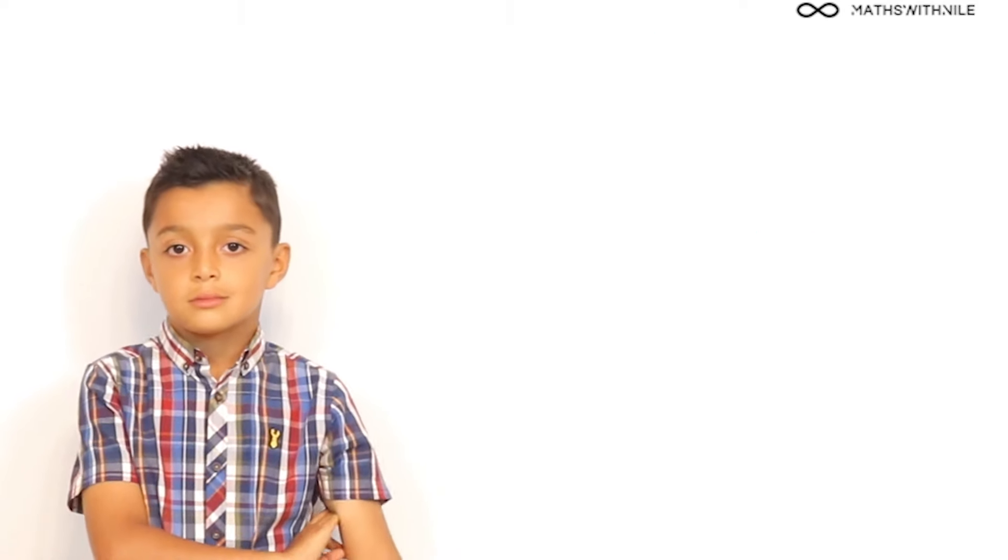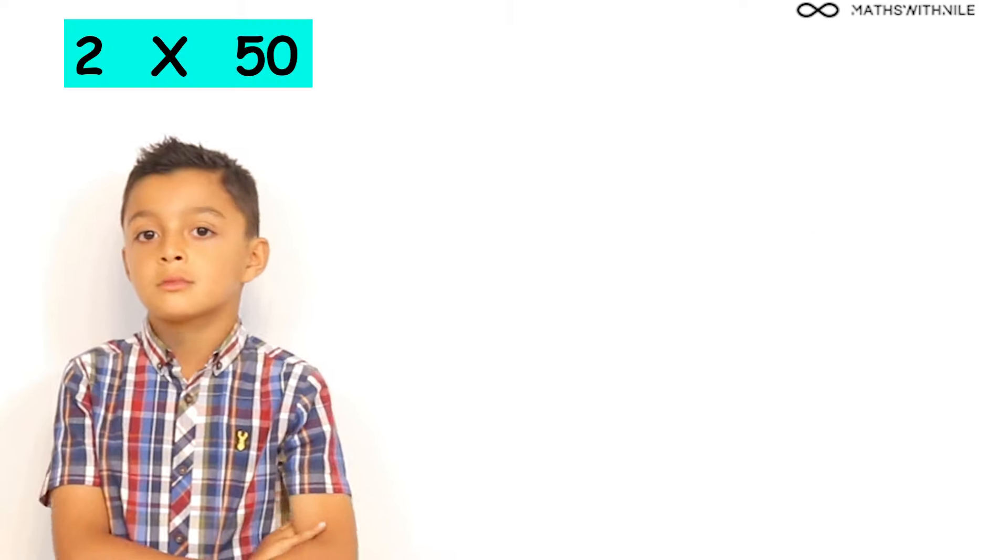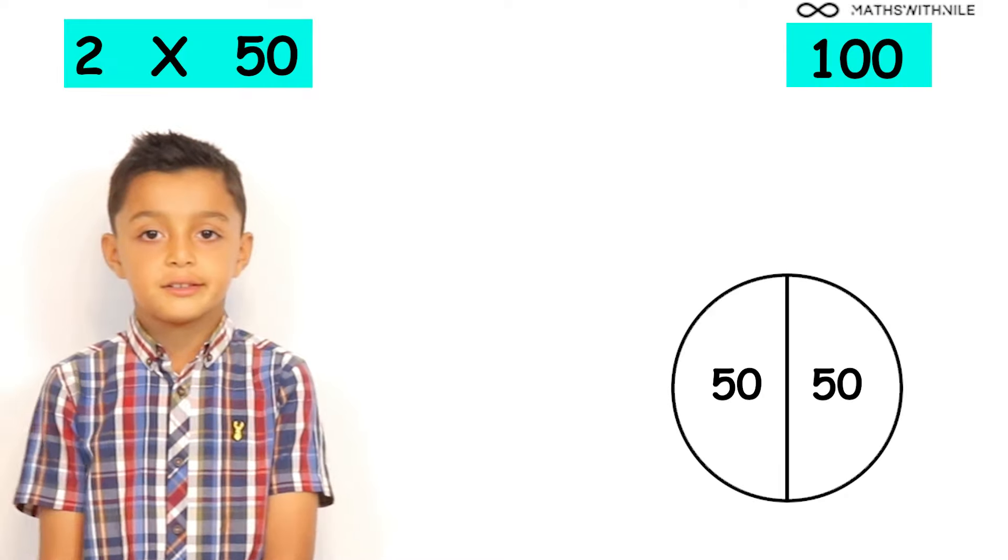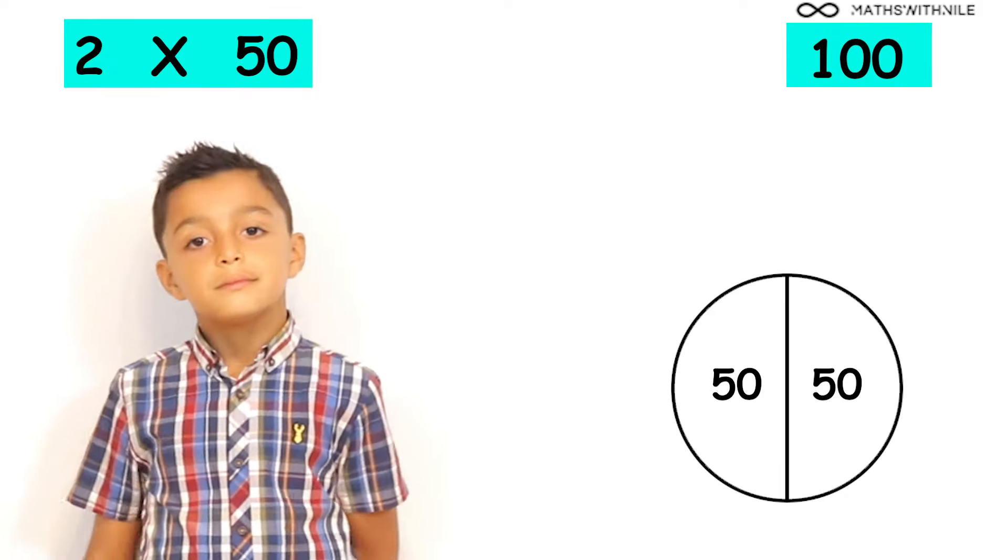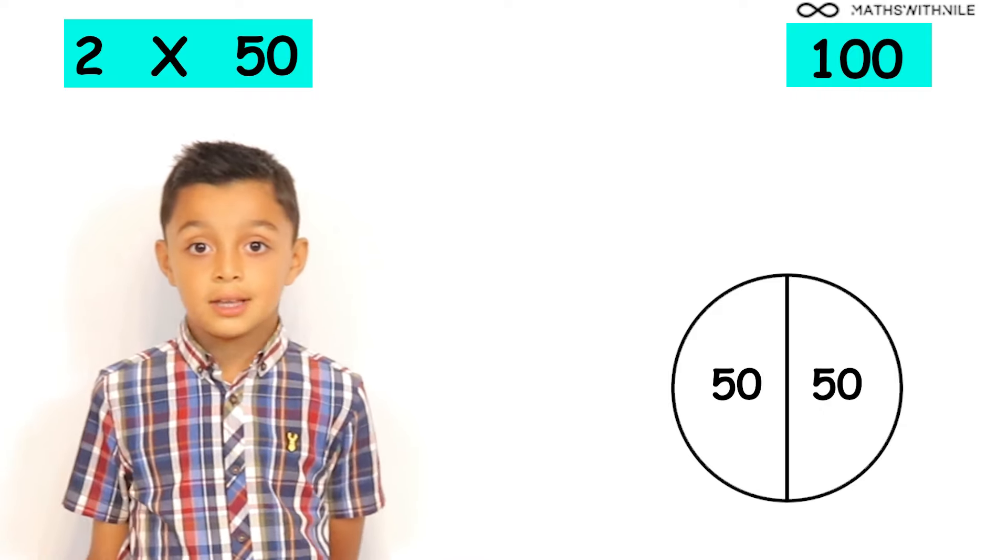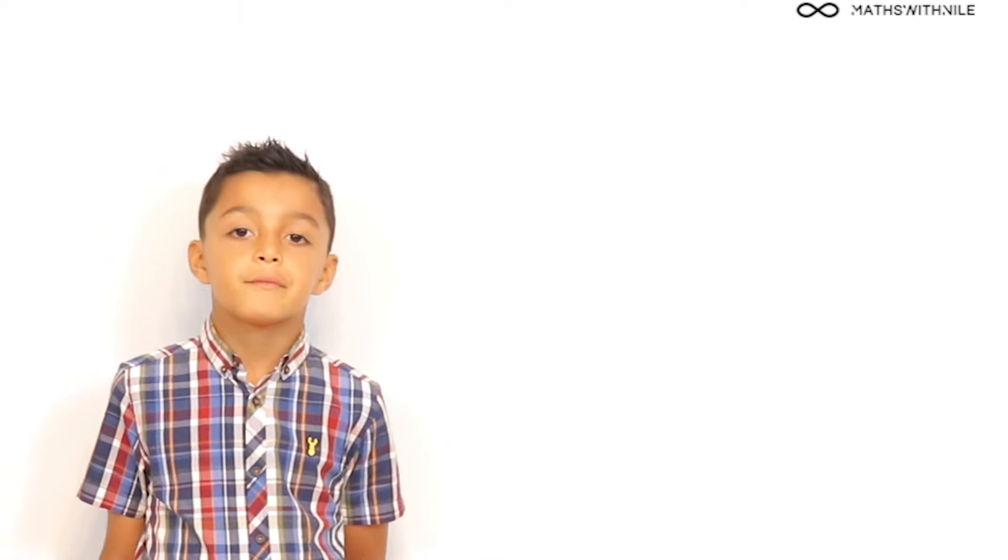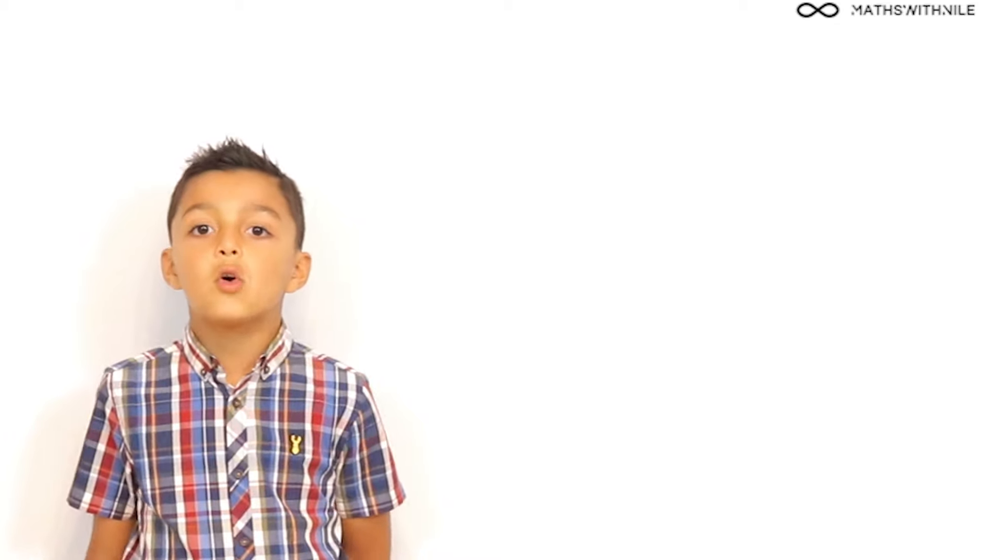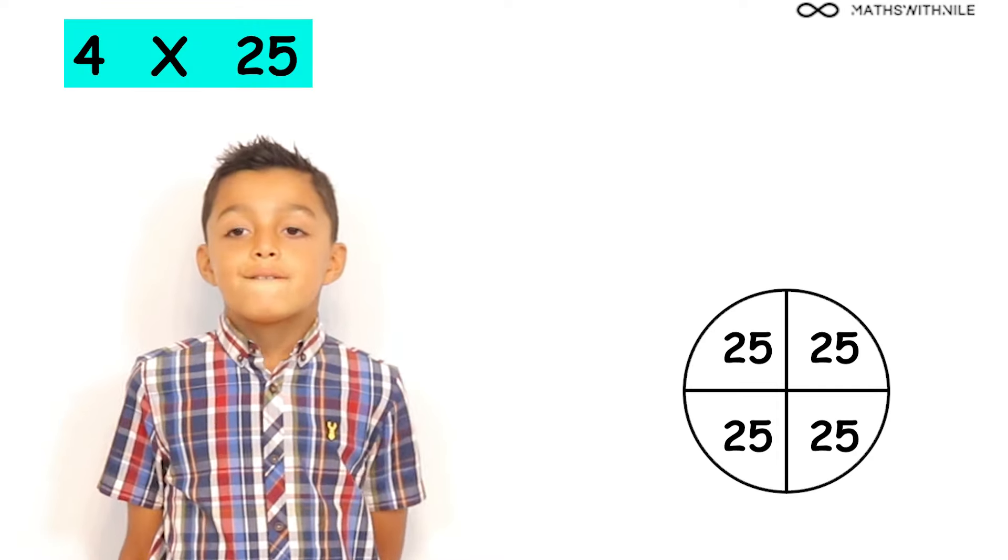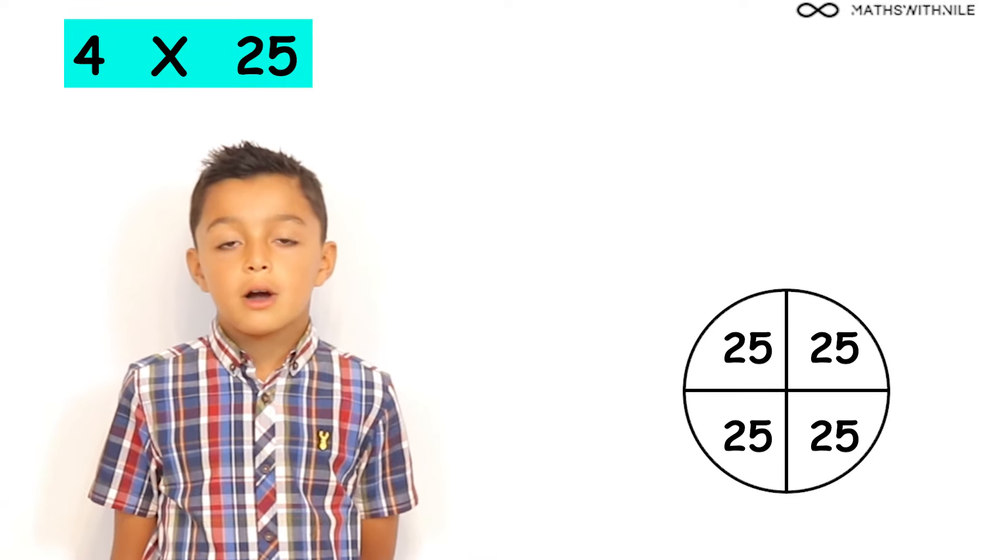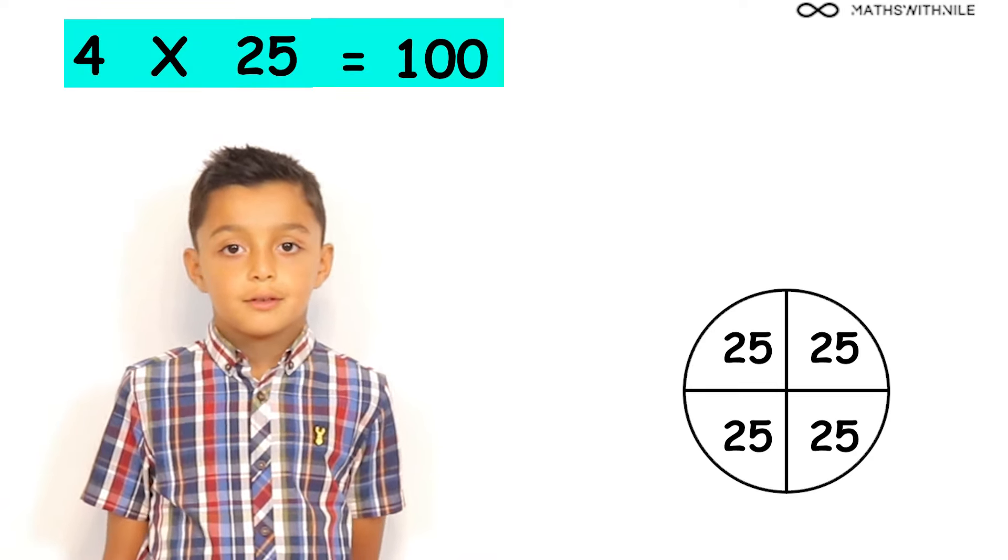So, what is 2 times 50? 100. Okay, and that's what we mean when there are two lots of 50s, 2 times 50 gives us 100. So, how many 25s did you say was in 100? Four. So, if you had to put that in a multiplication number sentence, what would you do? Four times 25 equals 100. Very good Niall.